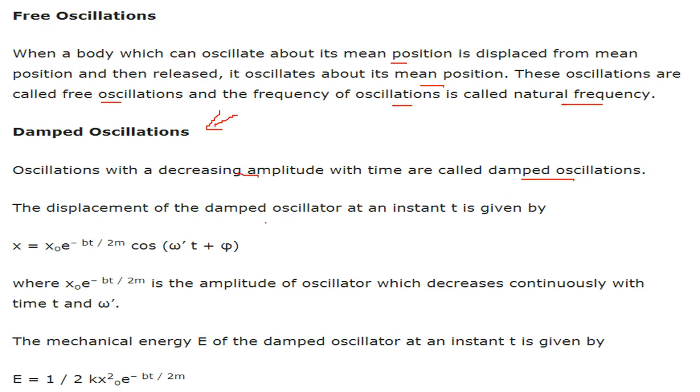The displacement of this damped oscillator at some instant of time t is given by this expression x equal to x0 e to the power minus bt by 2m and cos omega t plus phi. This value is the amplitude of oscillator which is decreasing, that is why it is e to the power continuously with time and of course we have omega.